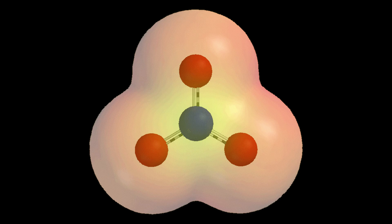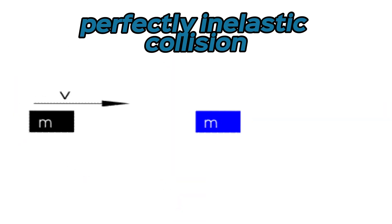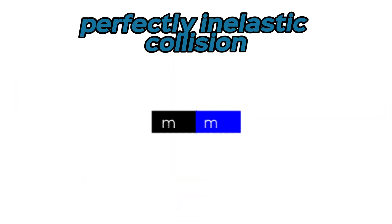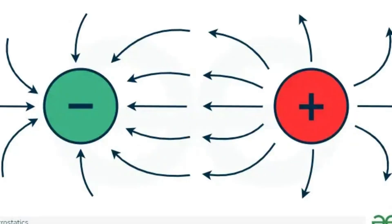Ion thrusters use beams of ions—electrically charged atoms or molecules—to create thrust in accordance with momentum conservation. The method of accelerating the ions varies, but all designs take advantage of the charge-to-mass ratio of the ions.